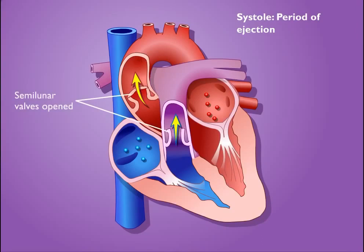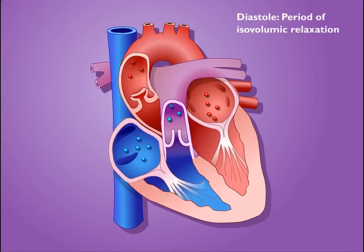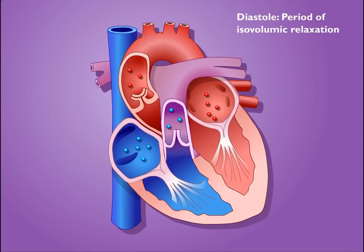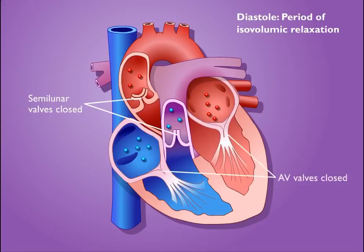When the ventricles relax and their pressures drop, blood flowing back toward the relaxed ventricles causes the semilunar valves to close, which is the beginning of ventricular diastole. Note that the atrioventricular valves remain closed.